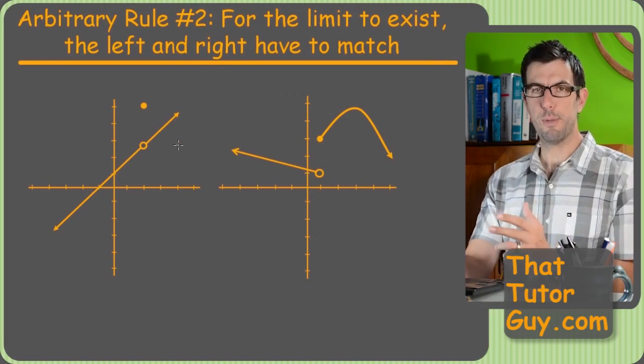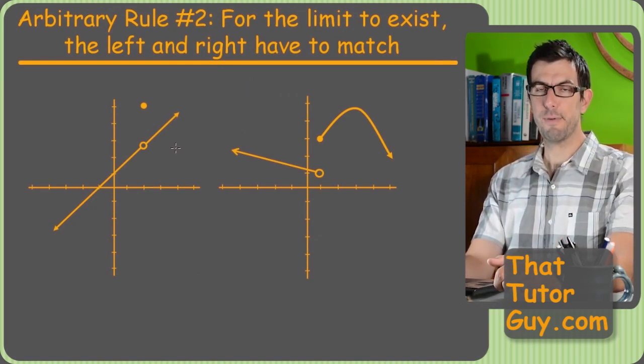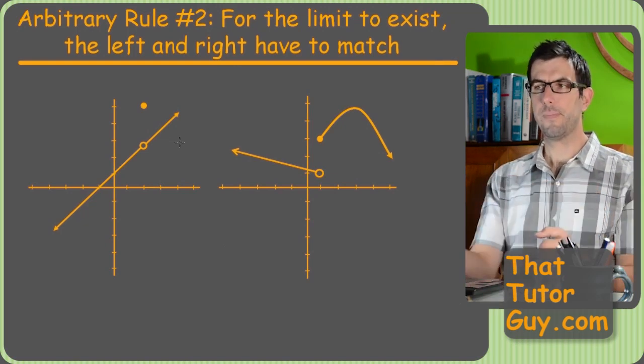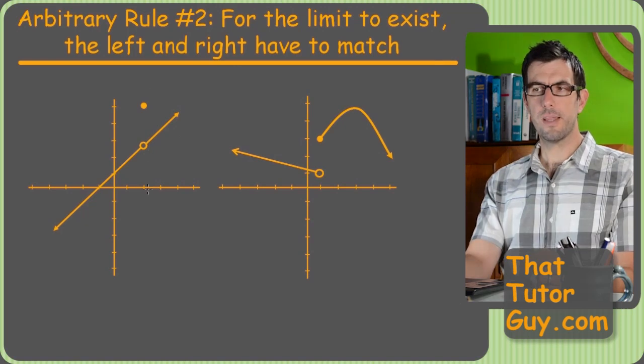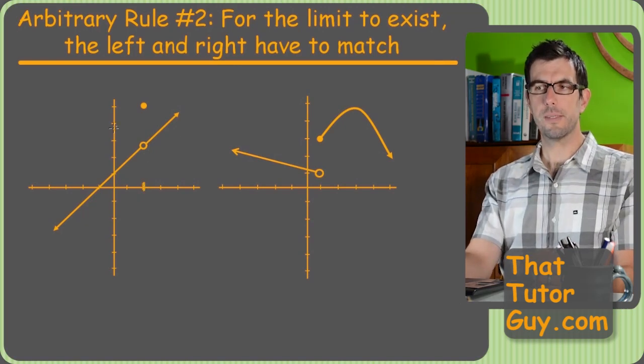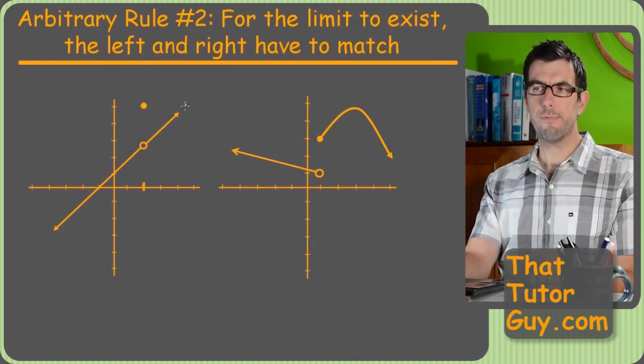All right, arbitrary rule number two, and it's the one we've already beat a little bit over the head in the previous video, which is: the left and right have to match. So in this particular case, if we're trying to find the limit as x approaches two on this left-hand graph, what you'll notice is the key point is that if we drove, if we approach from the right, so we're coming from this direction on a one-sided limit.